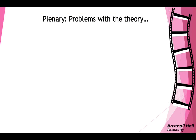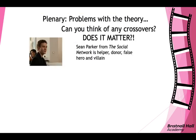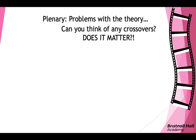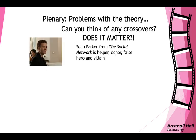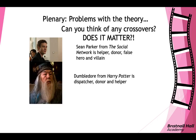For the plenary, we're looking at the problem with Propp's theory — specifically whether it matters that there's a lot of crossover between characters. Take Sean Parker from The Social Network — a real person — who is a helper, a donor, a false hero, and a villain all at once. Does that cause a problem for the theory?